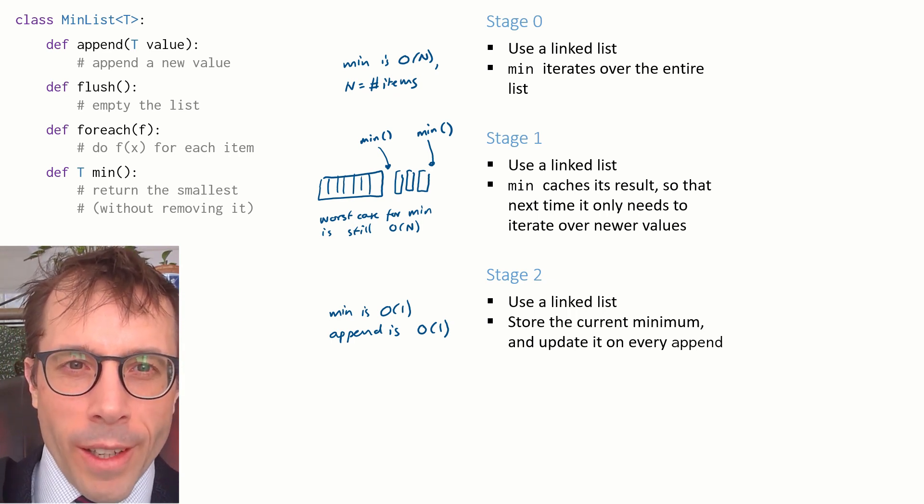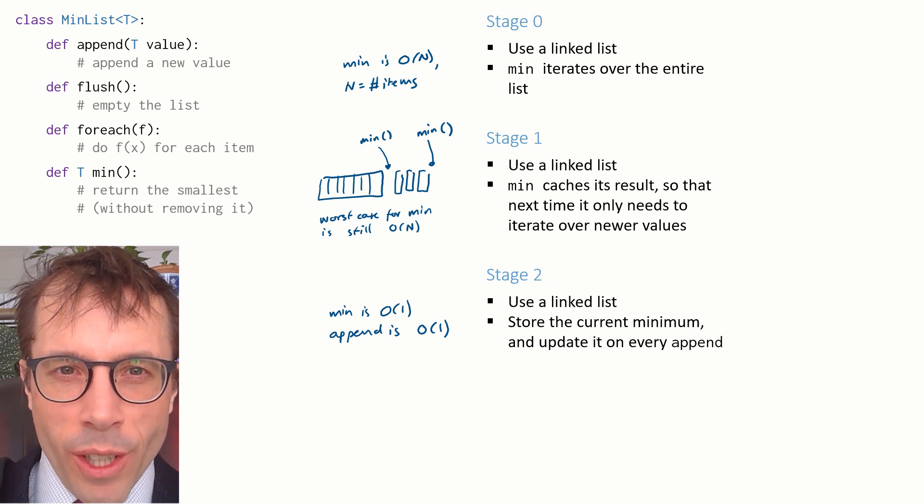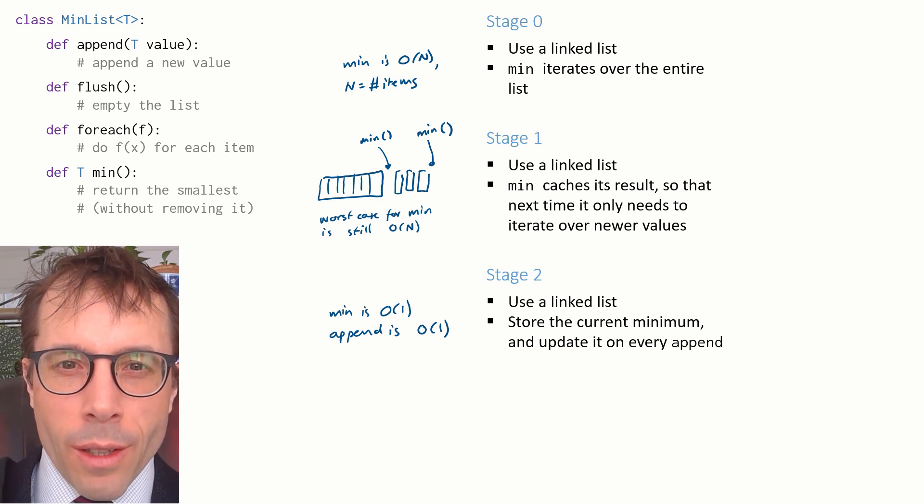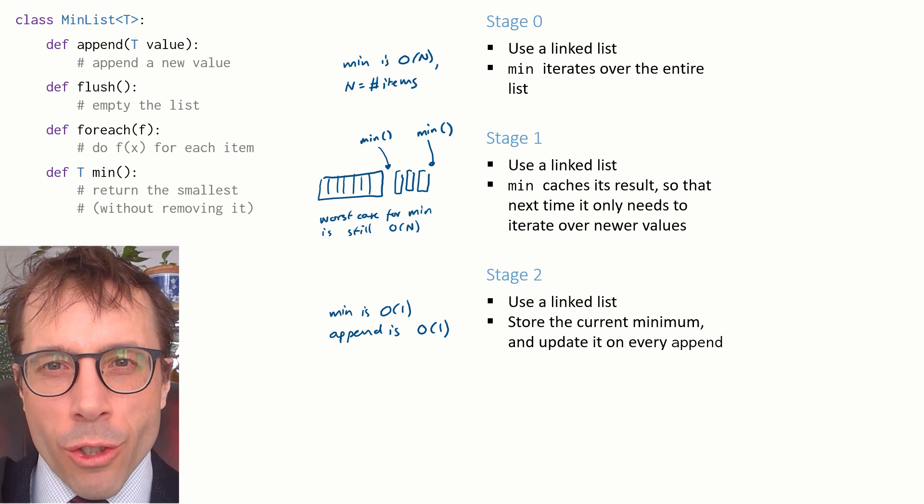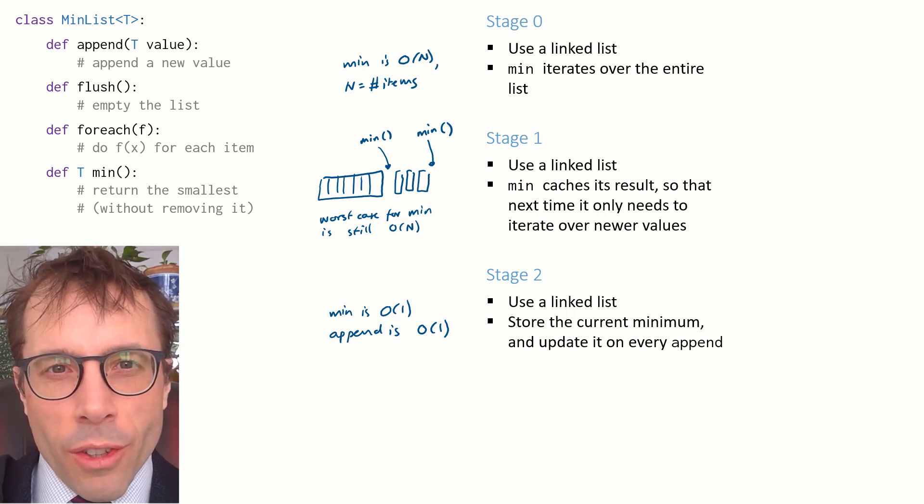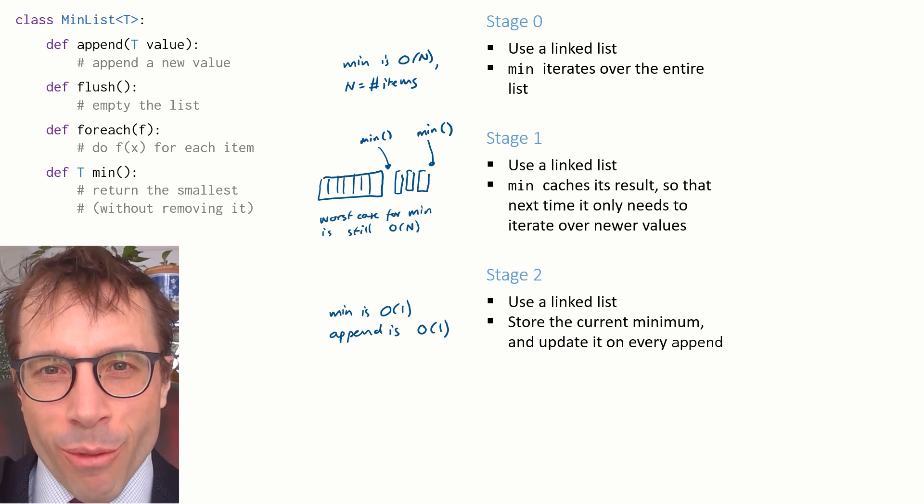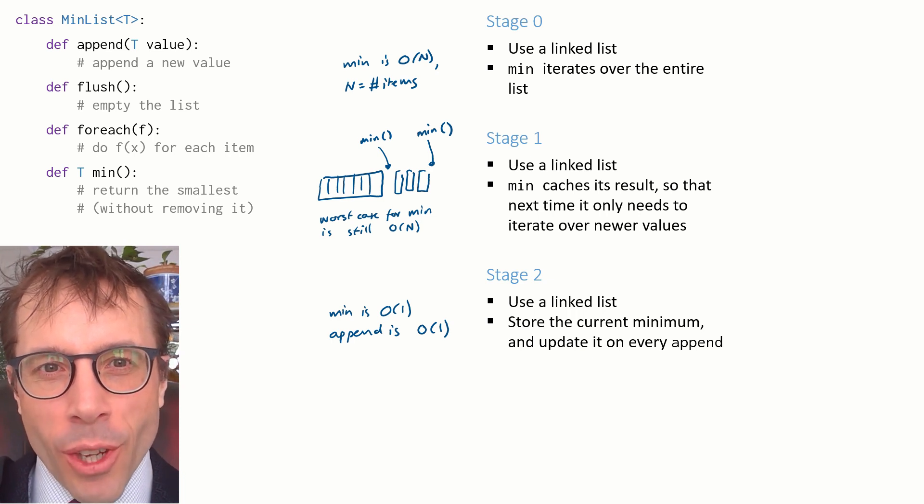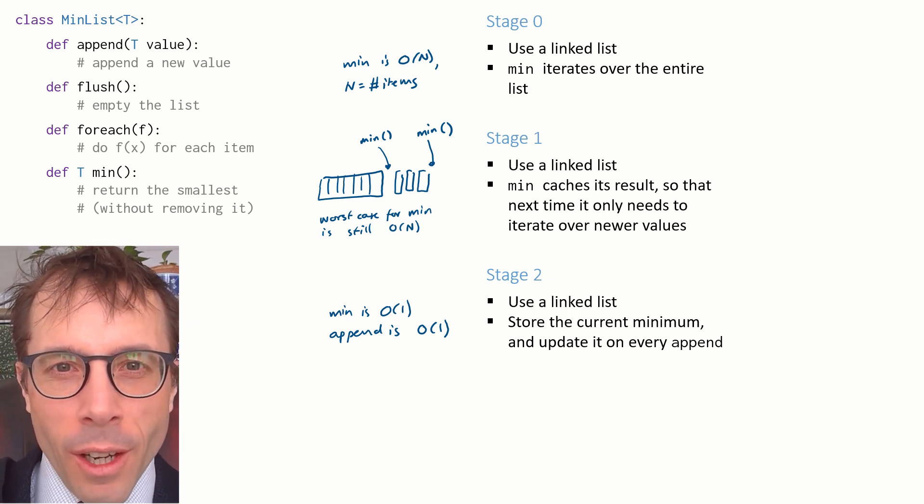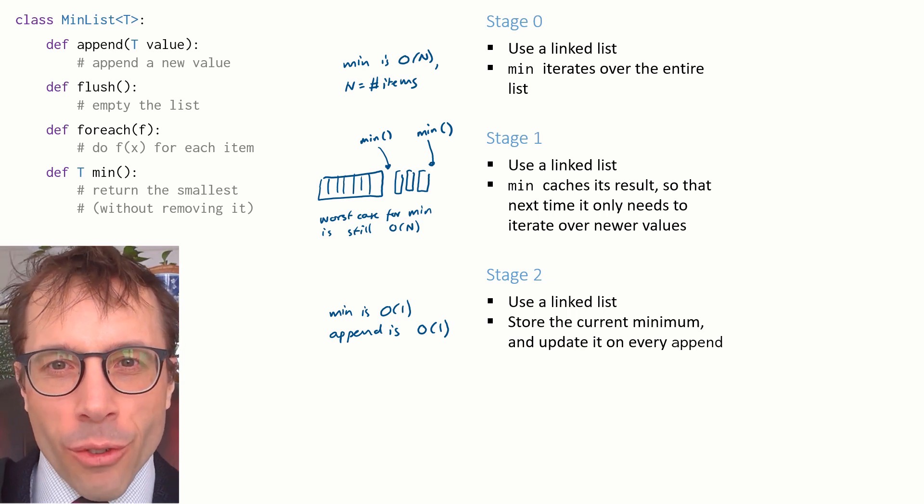Great, well, except it does feel like we've lost something here. It feels unfair to say that stage 2 is better than stage 1 because it doesn't actually do less work. In fact it does more. If the user of this data structure adds some items and then calls flush and then calls min, then there's no need to even run the comparisons on those newer items because they get flushed.